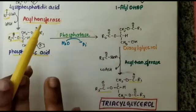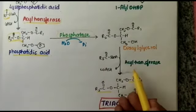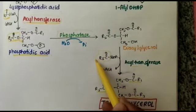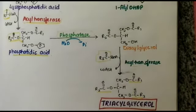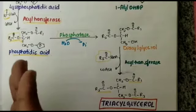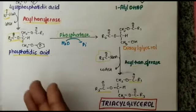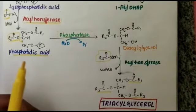The diacylglycerol will be converted into triacylglycerol by another acyl group transferase. The third acyl group comes into action and occupies the third OH group of the glycerol-3-phosphate, forming triacylglycerol. In the name triacylglycerol, three acyl groups are added consecutively by enzymes acting on the substrates.